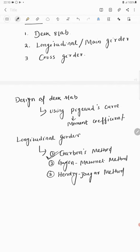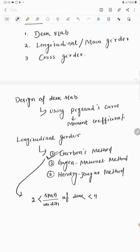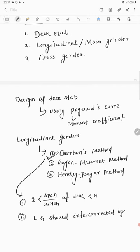There are certain specifications to use Courbon's method. Number one: the span-to-width ratio of the deck should be within 2 to 4. Number two: the longitudinal girders should be interconnected by at least 5 symmetrically placed cross girders.